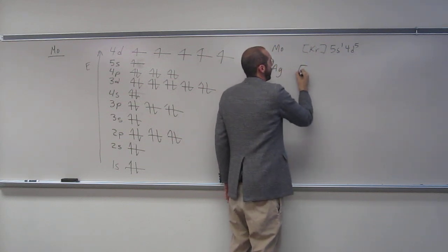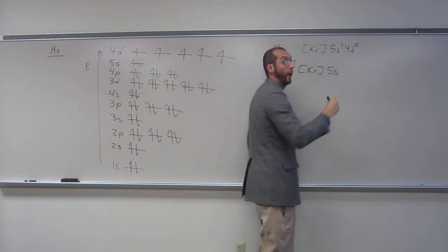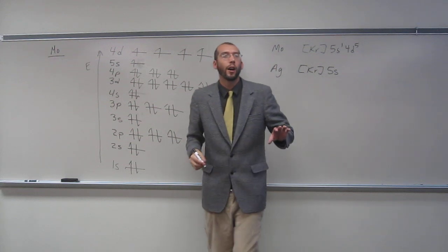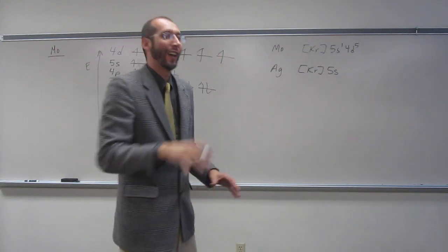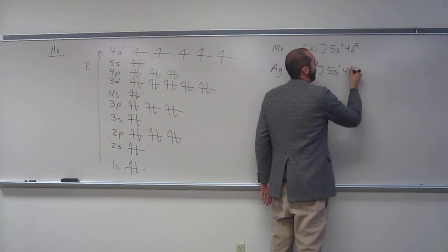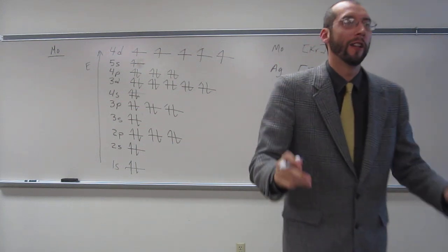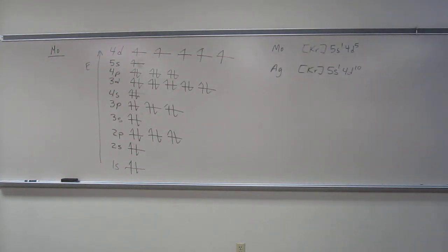Kr 5s. 5s 2. Well, okay, so, what does it look like? Let's say that. 5s 2, 4d 10, right? But if we did what it should, like you were thinking I was saying, it would have been 5s2, 4d9, right?